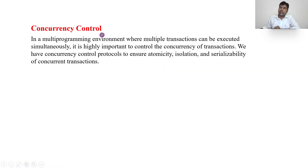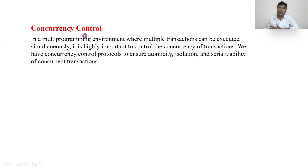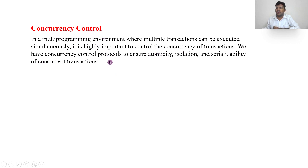Coming to our topic — concurrency control. Concurrency means executing simultaneously. Concurrency control means when you are executing multiple transactions simultaneously, you need to control those transactions. Controlling multiple transactions at a time is called concurrency control. In a multiple program environment where multiple transactions are executed simultaneously, it is highly important to control the concurrency of transactions, otherwise there will be no consistent data. We have concurrency control protocols that ensure atomicity, isolation, serializability, and consistency of concurrent transactions.